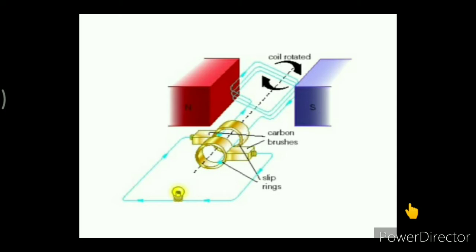The AC generator consists of a rectangular coil of wire which can be rotated about an axis. The coil is located between the two poles of two permanent magnets, shown as N and S. As the coil rotates, the magnetic field through the coil changes, which induces an electromotive force (EMF) between the ends of the coil.